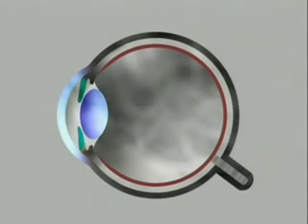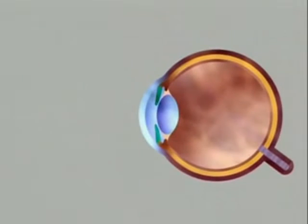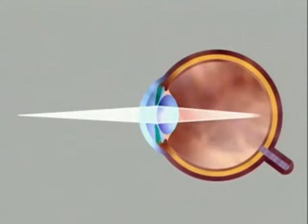The retina lines the interior of the eyeball. Light entering the eye is bent by the lens and focused on the retina. The lens does this by changing shape.